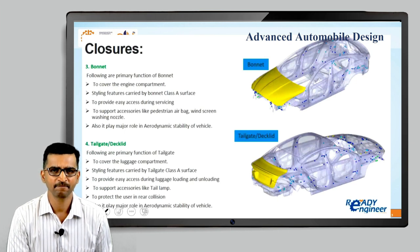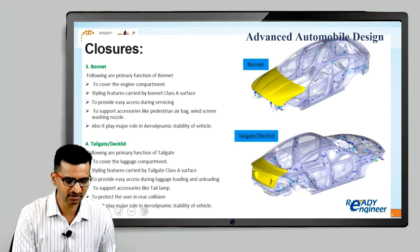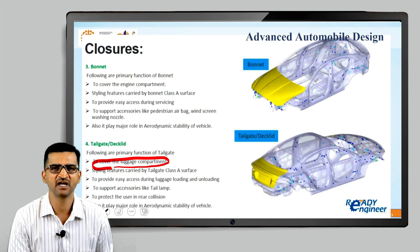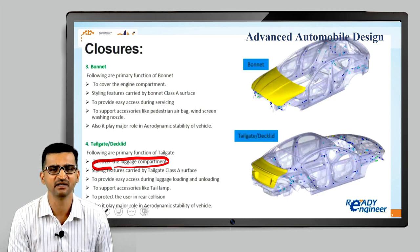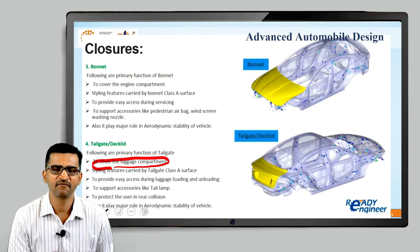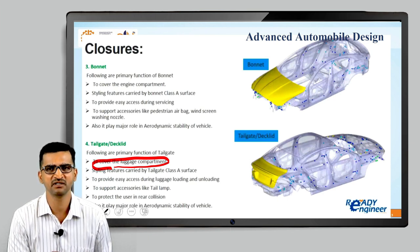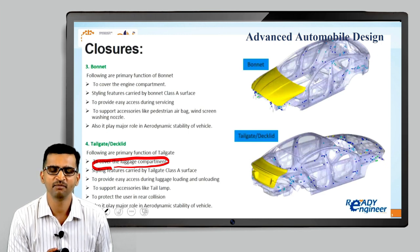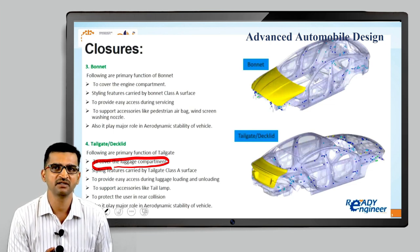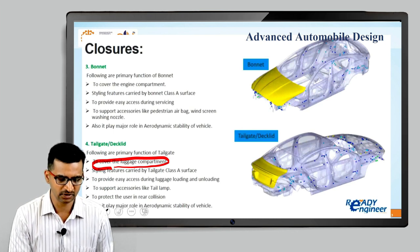Next is the tailgate and deck lid. The function is to cover the luggage compartment — this is essentially the rear side door. It plays an important role in the aesthetics of the car from the rear. It also opens access to the luggage space. One more function is safety related: it protects the passenger in case of rear collision — when a vehicle hits the car from the rear side. Secondarily, it also helps in aerodynamics, though to a lesser extent than the front bonnet. That covers all about closures.